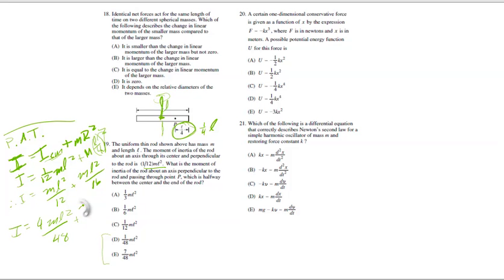So it would be 4 ML squared over 48 plus, I'm guessing 3, yeah that's right, 3. Okay, yeah that's 48. Okay, there we go. I equals 7/48 ML squared. So the answer to 19 is E.